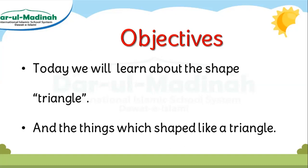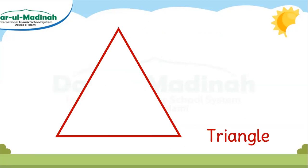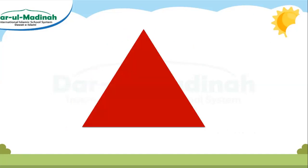Tho aaj ye shurru kerti hain. This is triangle. Piyare bachcho, ye shape triangle kehlatii hai. Is shape ko triangle keheti hain. This is triangle. Meri saath milkar padehi, triangle. This is triangle. Triangle, triangle, triangle.